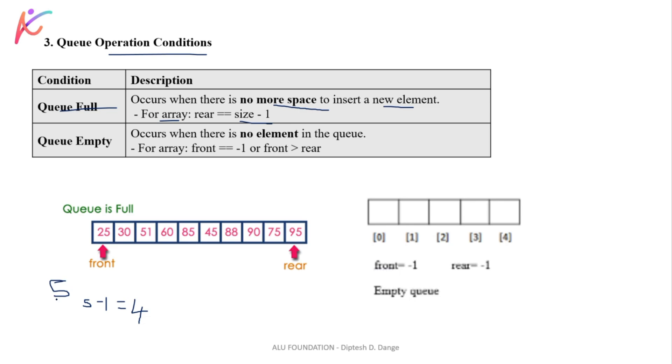So if your rear pointer is pointing to this fourth index, then I know that our Queue is Full, because array index starts from 0. So 0, 1, 2, 3, 4 - so 5 elements. So size means how many elements it stores. Assume that Queue stores 5 elements, but first index starts from 0.